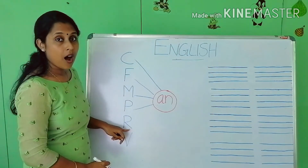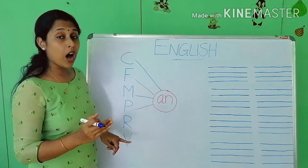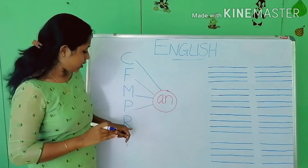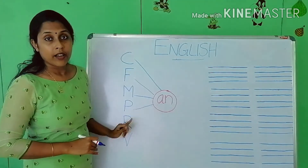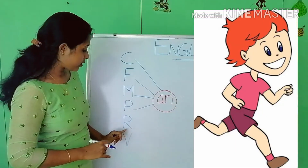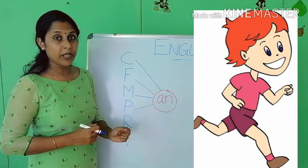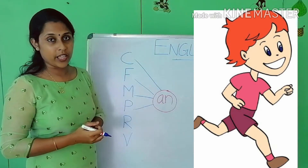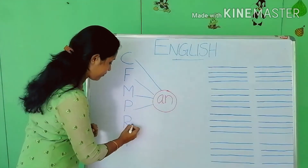Next is R. The sound of R is R. R and AN — 'ran'. Ran means to run. R and 'ran'.